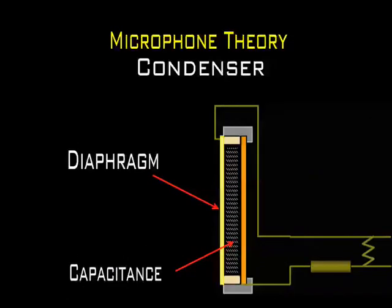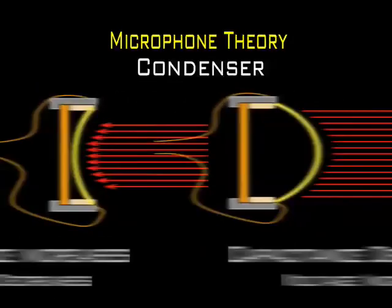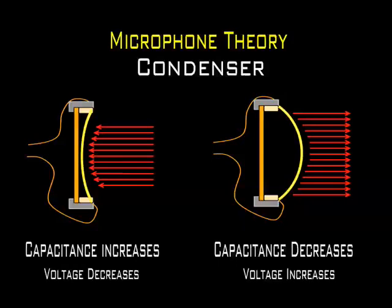A capacitor has two plates with a voltage between them. In the condenser mic, one of the plates is made of a very light material and acts as the diaphragm. The diaphragm vibrates when struck by sound waves, changing the distance between the two plates and therefore changing the capacitance. When the plates are closer together, capacitance increases and a charge current occurs. When the plates are further apart, capacitance decreases and a discharge current occurs.